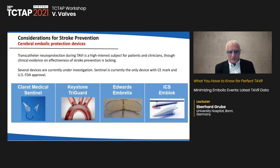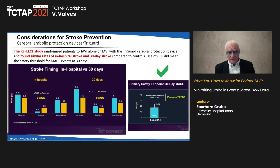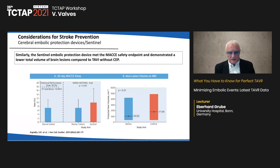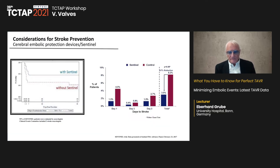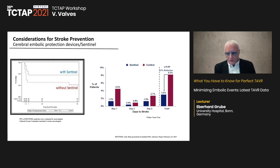Stroke prevention with embolic protection devices: the Sentinel and TriGuard are most used. The REFLECT study showed similar rates of in-hospital and 30-day stroke using these devices. The Sentinel device met its safety endpoint and demonstrated lower total volume of brain lesions compared to TAVI without protection. There was a reduction in stroke from 8.2% to 3.0%, but this was not statistically significant.